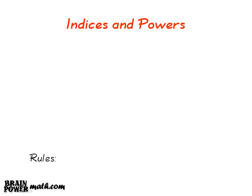There are certain rules you must remember when you are working with indices and powers. The rules are now coming up on the screen. Rule 1 states that a to the power of m, multiplied by a to the power of n, is equal to a to the power of m plus n.